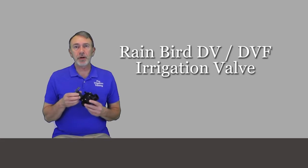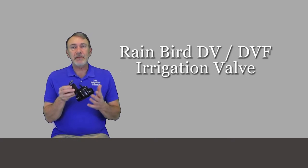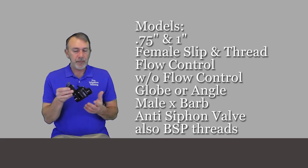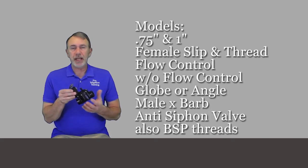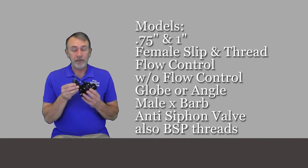Let's talk about Rainbird's irrigation valve called the DV, also has a DVF which is the flow control model. These come in three-quarter inch and one inch for the DV, and this is a super solid valve.